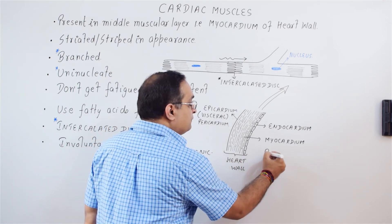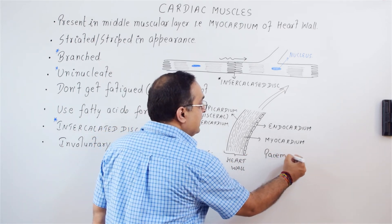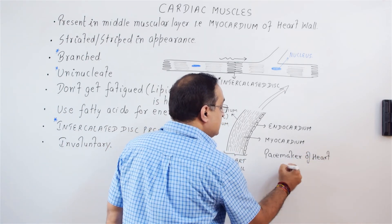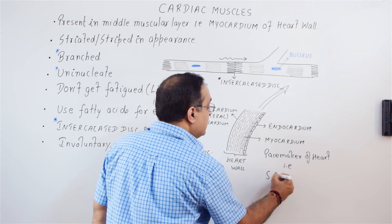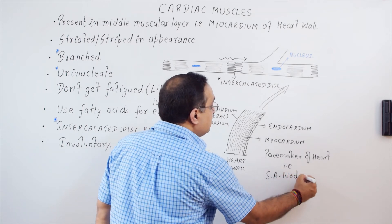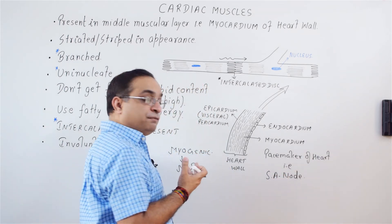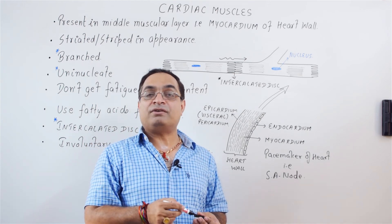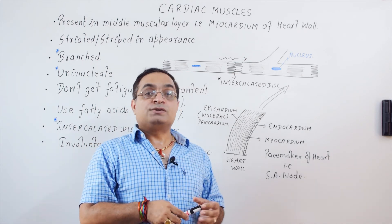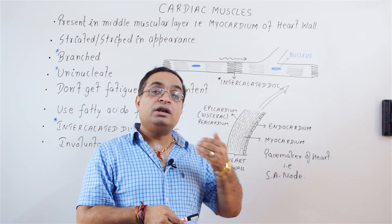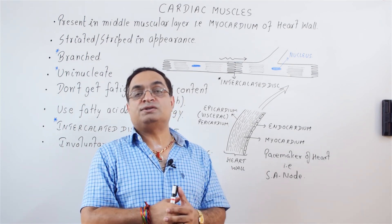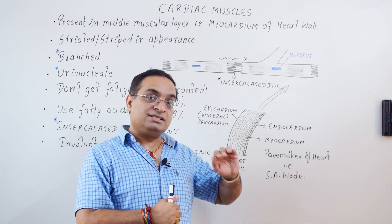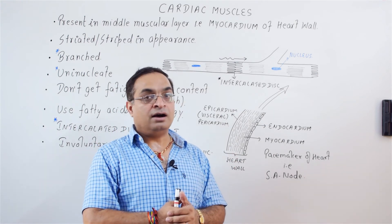The pacemaker of the heart is the SA node — the sinoatrial node. The SA node consists of modified cardiac muscle fibers which are capable of generating electrical signals. So cardiac muscle fibers are involuntary and they contract in response to signals from the SA node, which is located inside the wall of the heart.